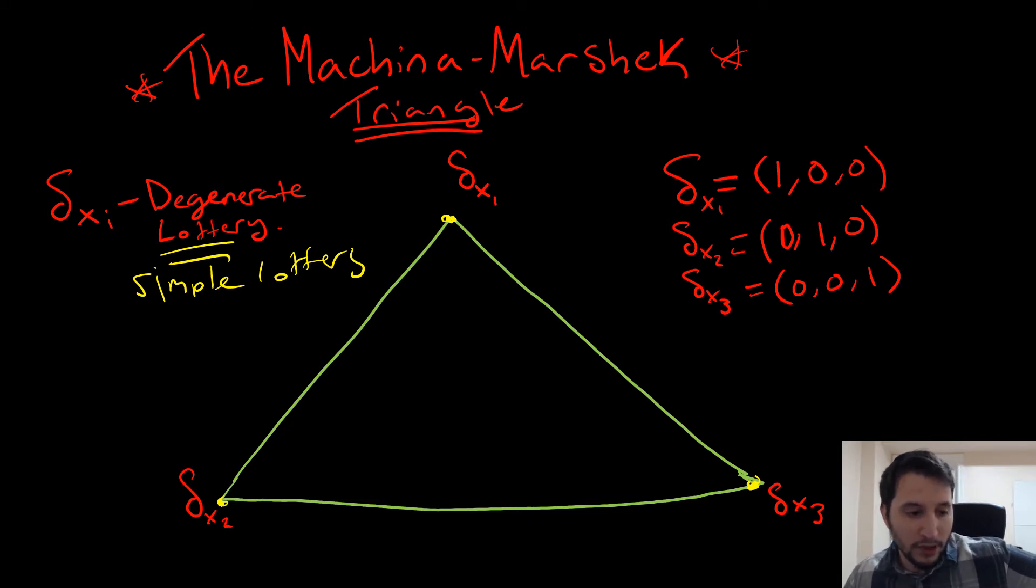One thing that we should note in our simplex here, this triangle, is that we can model any lottery as a combination of these two. So let's consider constructing this lottery here: one third, one third, and one third.